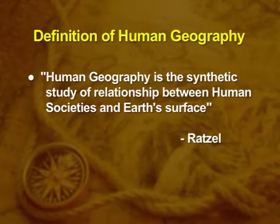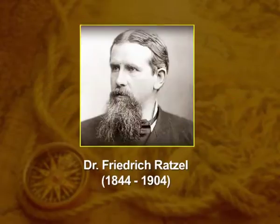Given a few definitions by the world's renowned geographers, let us look into their perspectives. Ratzel defined geography as: human geography is the synthetic study of the relationship between human societies and the Earth's surface. Frederick Ratzel was a German geographer who laid the foundation of human geography. In this definition, the two components — human societies and the Earth's surface — have been enveloped together to clearly explain their interdependencies.